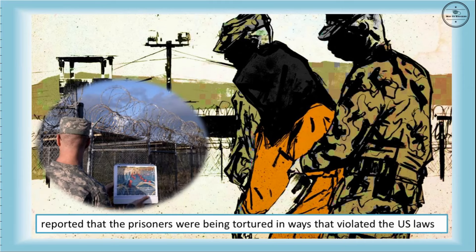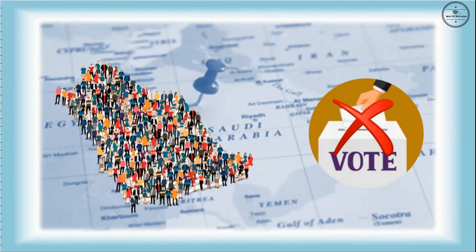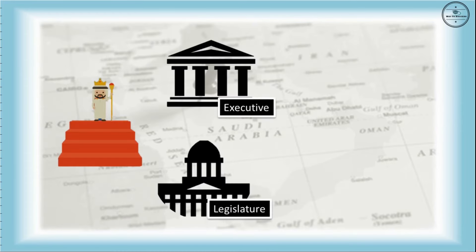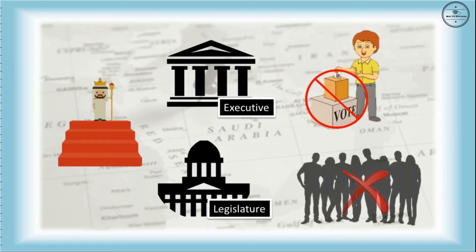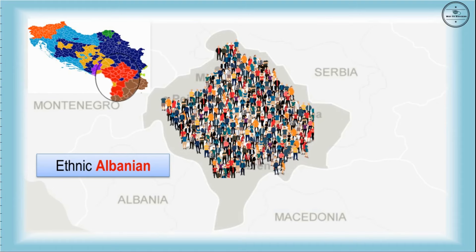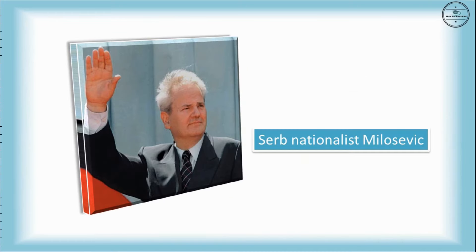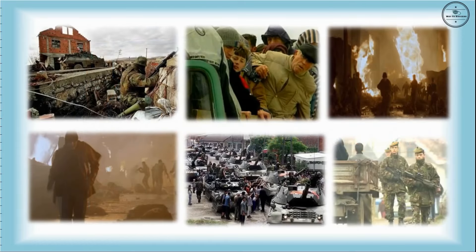A hereditary king is the ruler of Saudi Arabia, and the citizens do not have the right to elect the ruler. The king selects the executive and legislature without the election or concern of citizens. Kosovo was a province of Yugoslavia before its split. In this province, the majority population was ethnic Albanian, but in the entire country, Serbs were in majority. A narrow-minded Serb nationalist, Milosevic, had won the election. His government was very hostile to the Kosovo Albanians, who were demanded to leave the country.